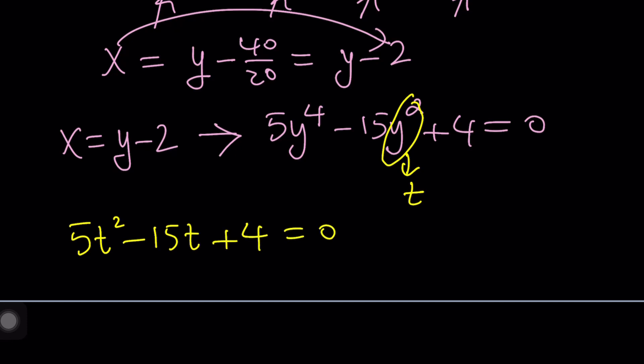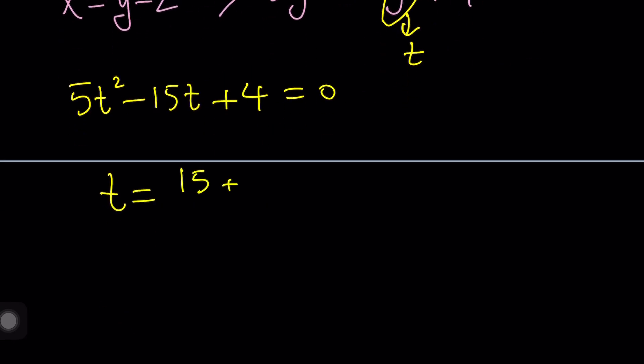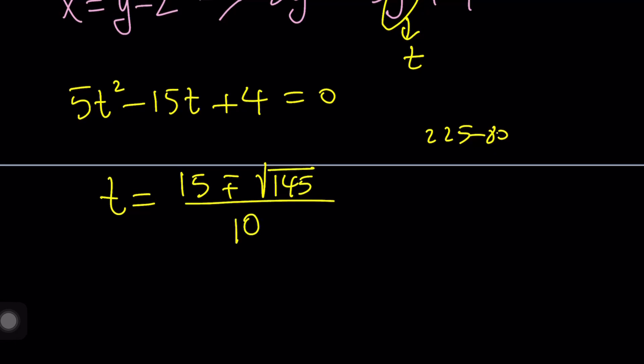5t squared minus 15t plus 4 equals 0. Let's go ahead and solve this using the quadratic formula. t equals negative b plus minus the square root of b squared, 225 minus 4ac. That's going to be 80, 145. Okay, 145, I don't think it has a perfect square. So, we're just going to leave it like that.